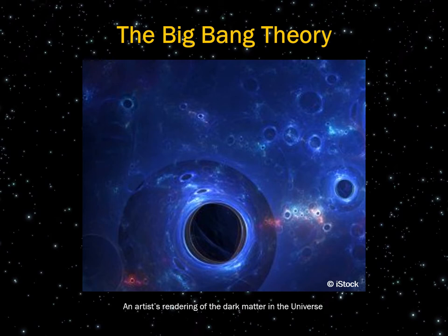An example of dark matter would be the presence of black holes, or possibly wormholes — any kind of substance that is the opposite of light energy.